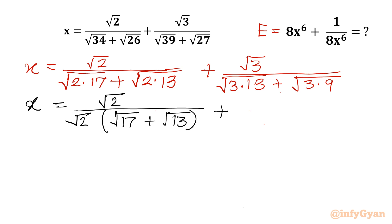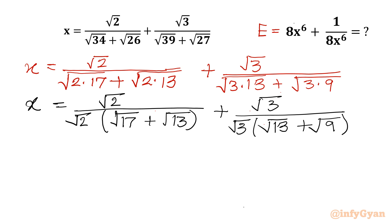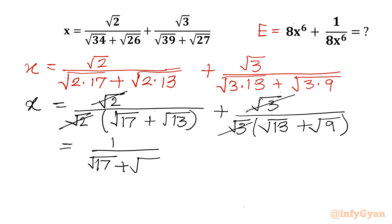Here I will be writing √3 in the numerator. After taking √3 common in the denominator, I will be having √13 plus √9. Now we can cancel √3 with √3 and √2 with √2. So it becomes 1 over (√17 + √13) plus 1 over (√13 + √9).